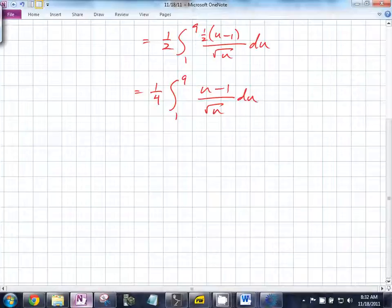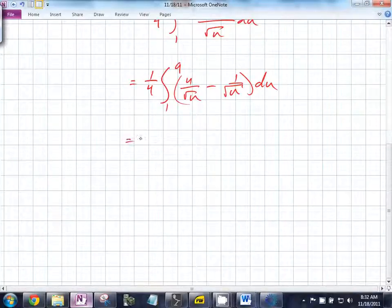When you simplify this, it turns out to be 1 fourth integral from 1 to 9 of u over the square root of u minus 1 over the square root of u du. What's u over the square root of u? What power is that? It's u to the first over u to the half, so what does this simplify to? U to the 1 half minus u to the negative 1 half du. Can we now integrate those? Absolutely.